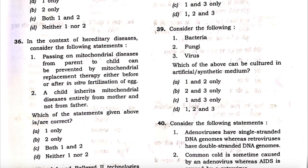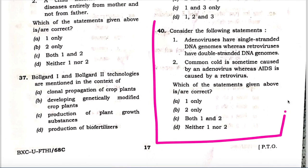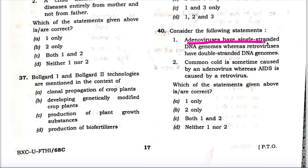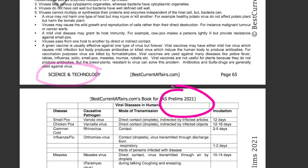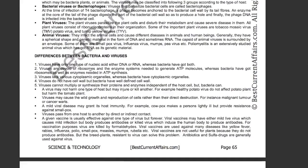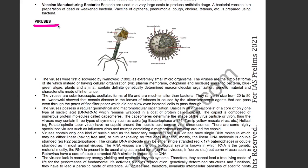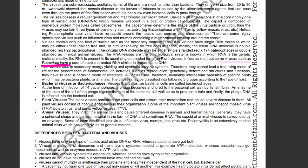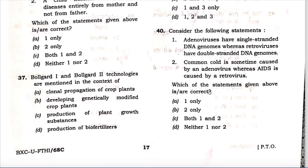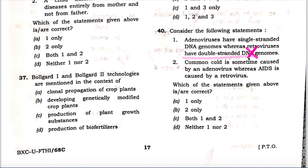Consider the following statements. The first statement is that adenoviruses have single-stranded DNA genomes whereas retroviruses have double-stranded DNA genomes. This statement is wrong — retroviruses have double-stranded RNA, not DNA. Now check this fact from our science book, Science and Technology booklet for IAS Prelims 2021, page number 65 — in the chapter on viruses, it is mentioned that some viruses such as retroviruses have a core of double-stranded RNA, similar in properties to DNA but not DNA. So the claim that retroviruses have double-stranded DNA is wrong.